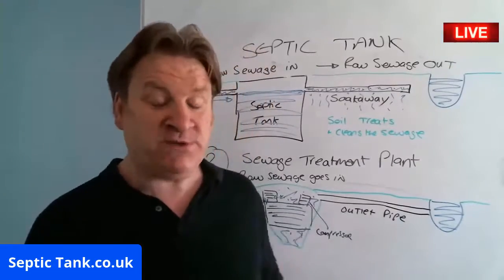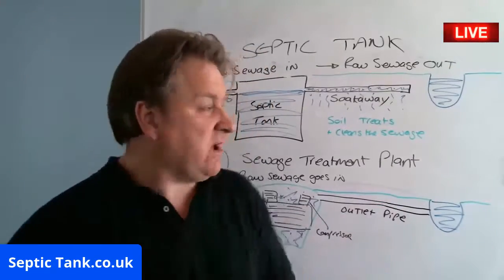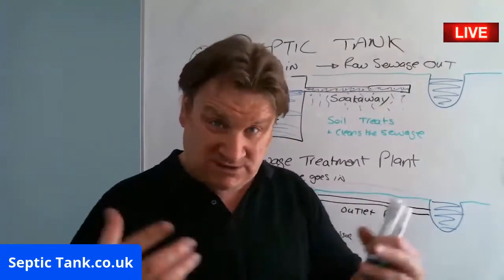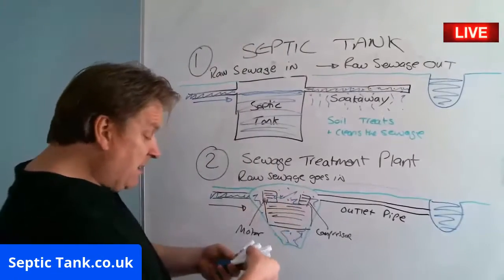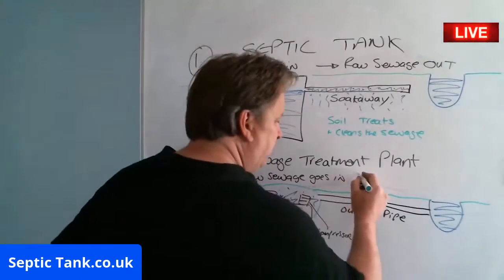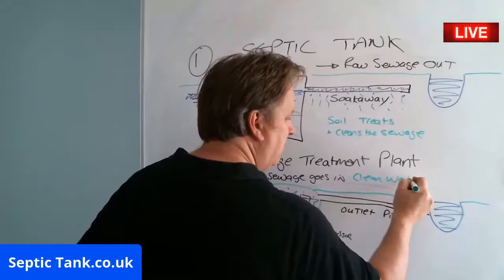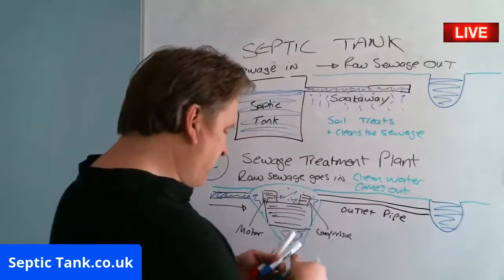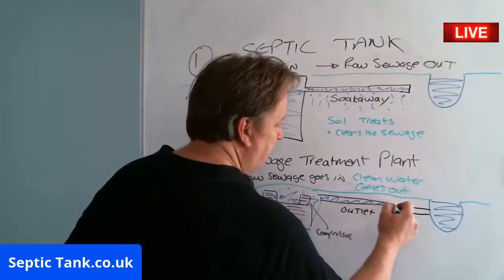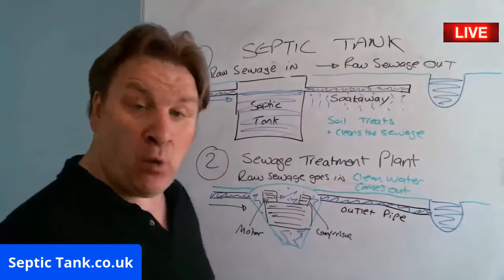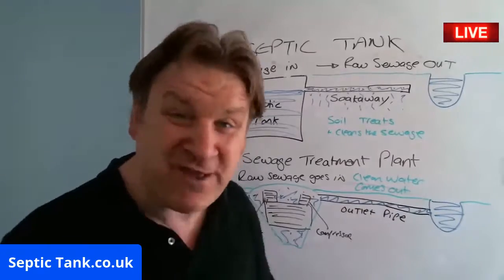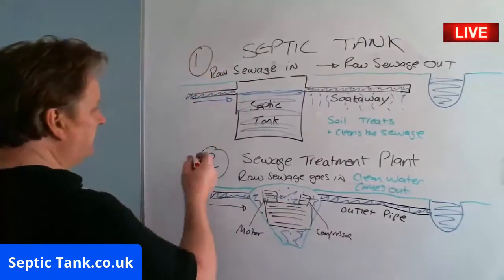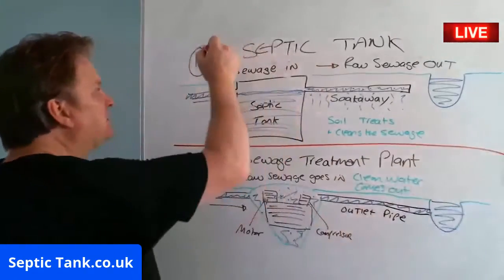All those bubbles give the bacteria and microbes in there loads of energy, and those bacteria and microbes eat all the bad stuff in the sewage. So raw sewage goes in but clean water comes out, and that clean water can come out of the outlet pipe. That's the difference between a septic tank and a sewage treatment plant.